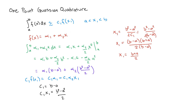Now we can properly define the approximation to this definite integral. The integral from a to b of f(x) can be approximated by the weighting factor c1 — which is (b minus a) — times the function evaluated at x1, which is (b plus a)/2. So the one-point Gaussian quadrature gives you the approximate solution to f(x) integrated over the domain [a, b].